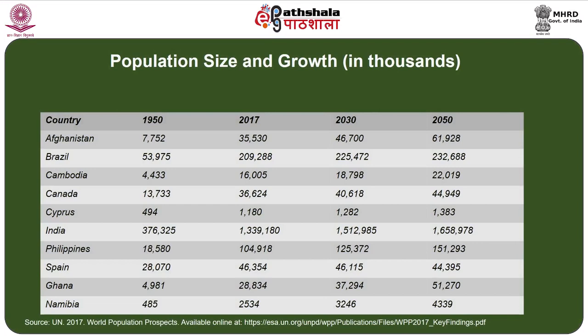Let us focus on population size and growth. The population size and its growth have been presented in a table for the years 1950, 2017, and projected figures for 2030, given in terms of thousands. In 2017, the population size of Namibia was 2,534 thousand, Philippines 104,918 thousand, Ghana 28,834 thousand, Brazil 209,288 thousand, and India 1,339,180 thousand. Population size for all countries in the table has grown between 1950 and 2017, although the extent of growth differs considerably across countries.